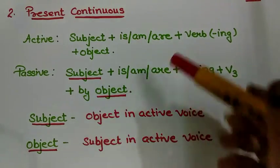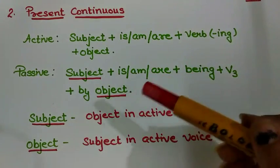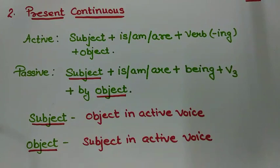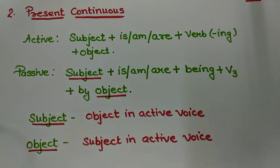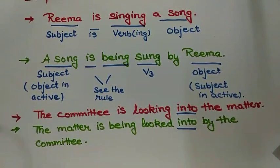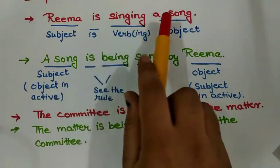Now when we know the constructional parts, let us try to understand this concept with the help of an example. So here we go with the very first example: Rima is singing a song.